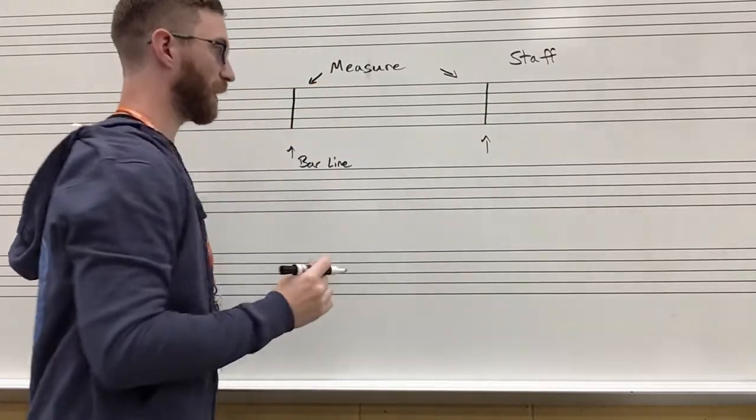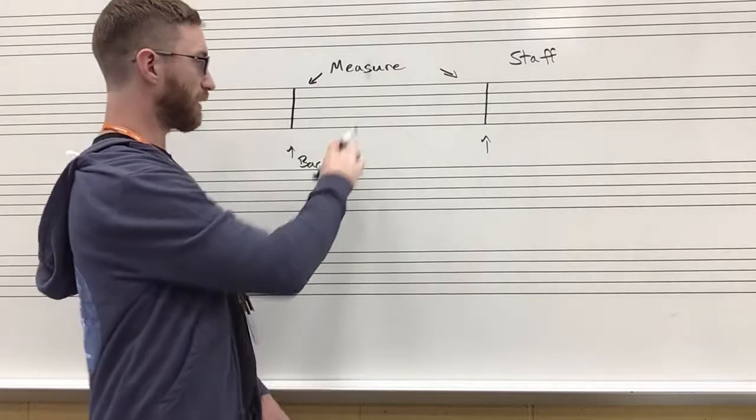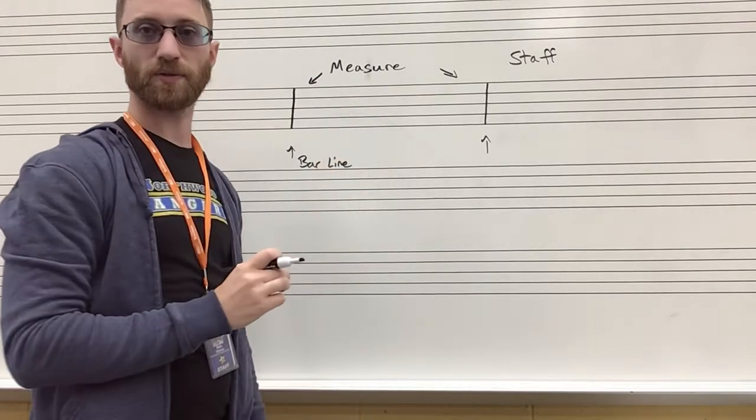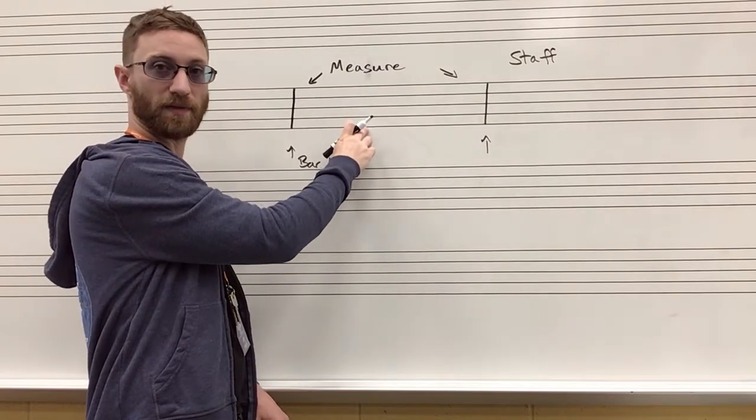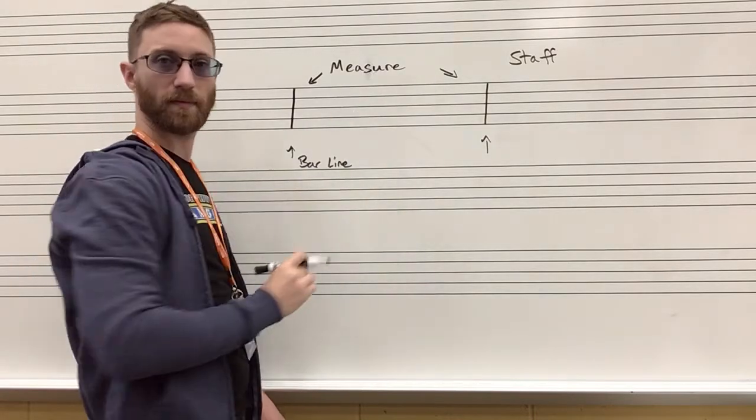Now what do the lines and spaces mean? Each line and each space is going to represent a sound. The lower you are on the staff, the lower the sound. The higher, the higher the sound.